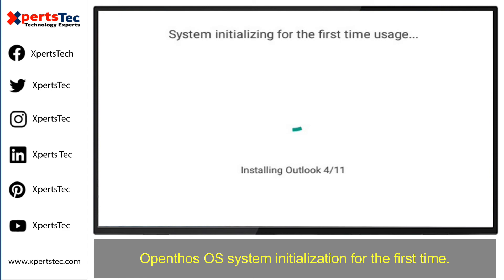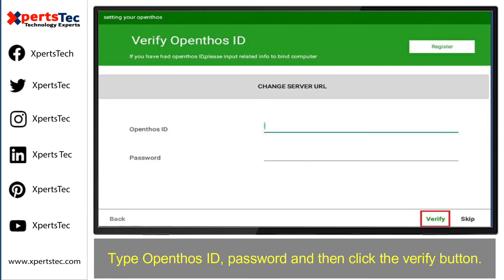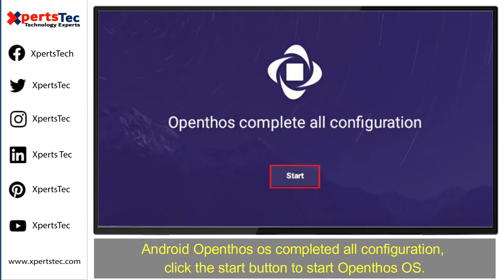OpenThos operating system will initialize for the first time. Type your OpenThos ID and password, then click the Verify button. Once Android OpenThos operating system has completed all configurations, click the Start button to launch OpenThos.